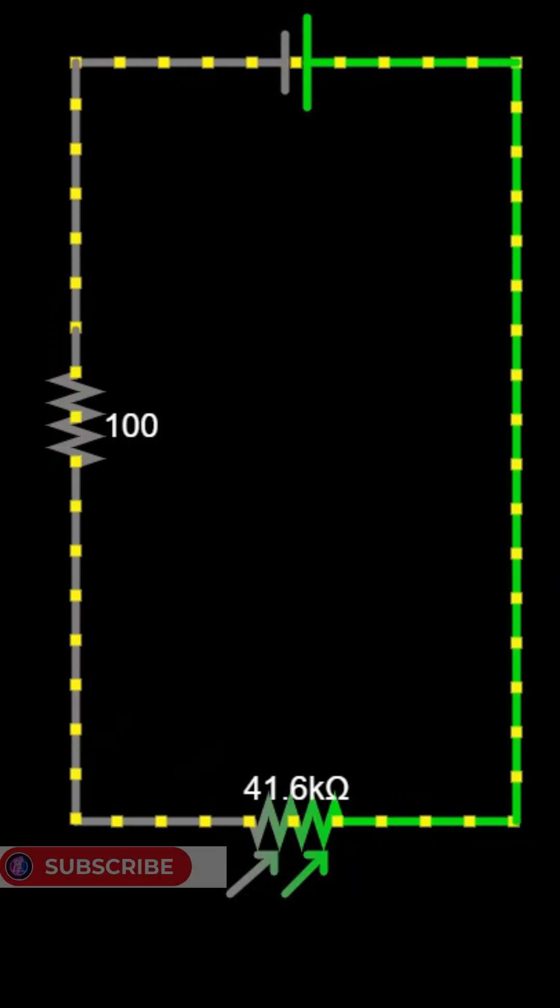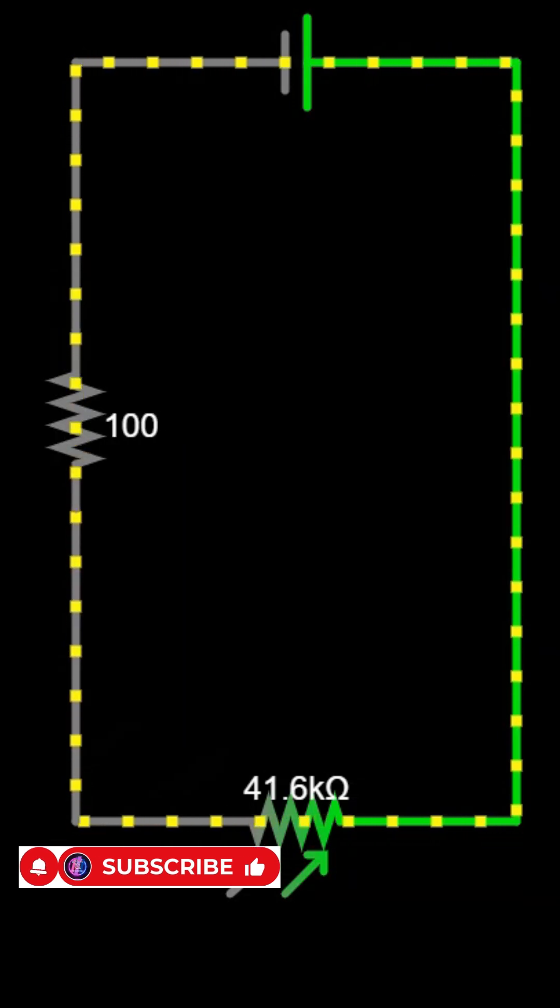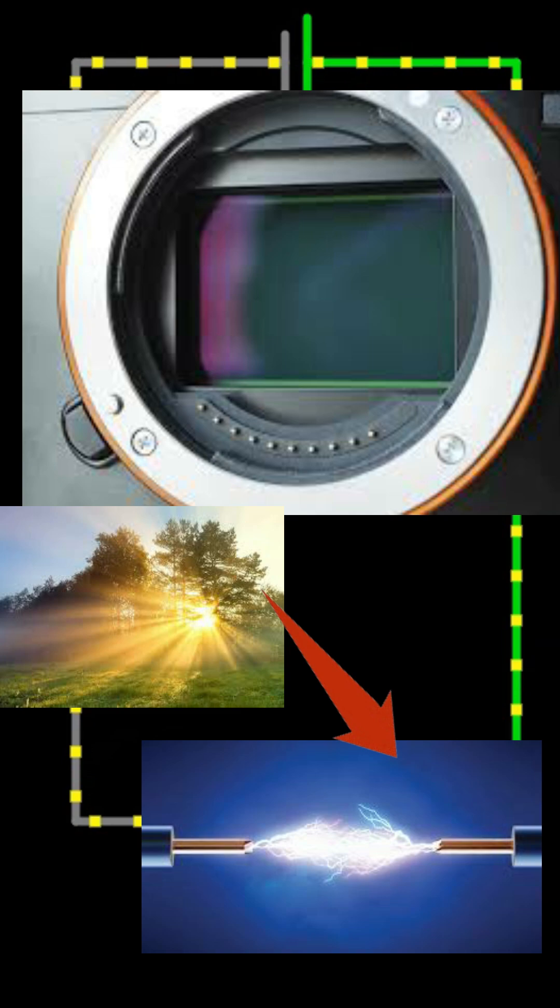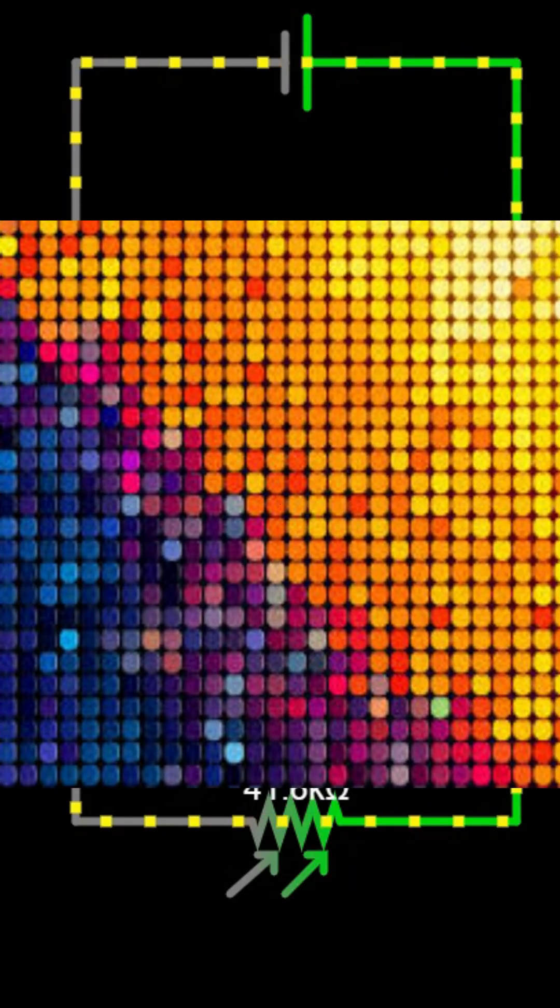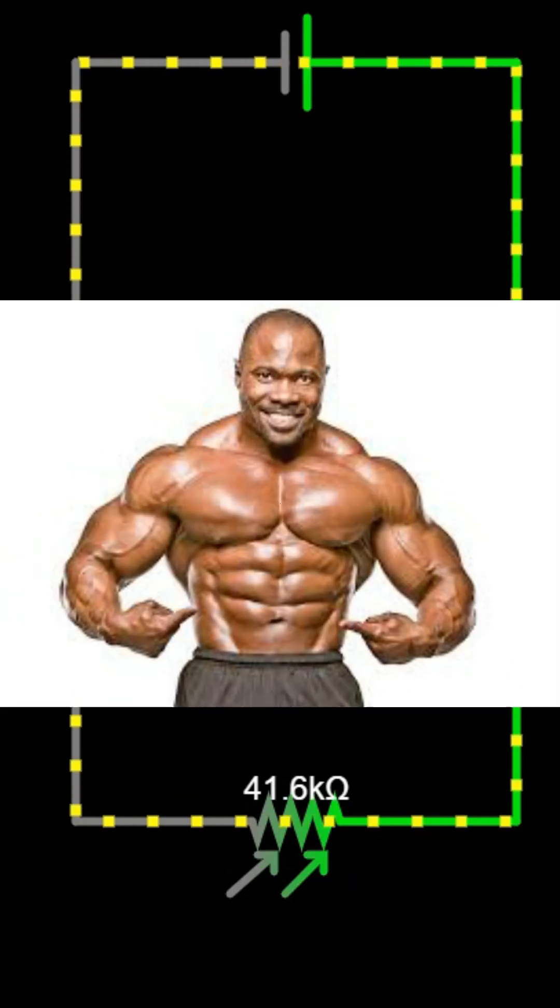Welcome to this short video about the camera sensor, the heart of every digital camera. A camera sensor converts light into electrical signals using millions of tiny pixels. Each pixel captures light intensity and color, and together they create a complete digital image.